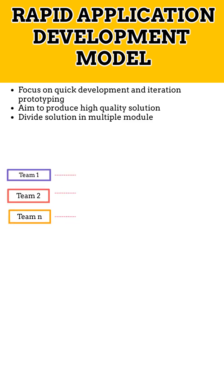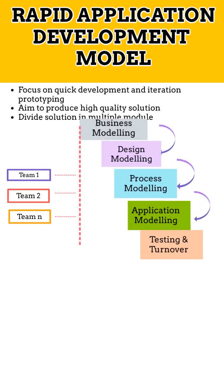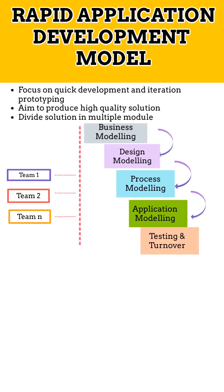Rapid Application Development Model focuses on quick development and iteration of prototypes over rigorous planning and testing. It aims to produce high-quality solutions with more involvement of stakeholders, iterative designs, and fast prototyping. The solution is divided into multiple modules and teams are assigned for parallel development, resulting in rapid development and fast delivery of a solution to the stakeholder.